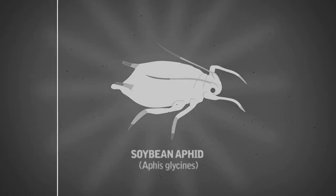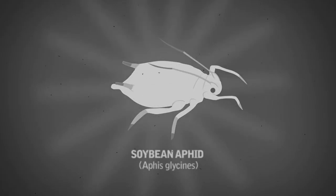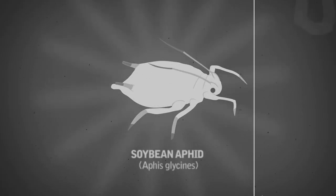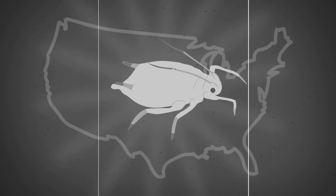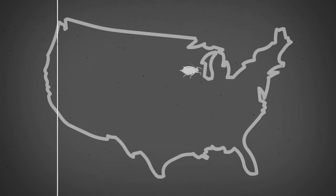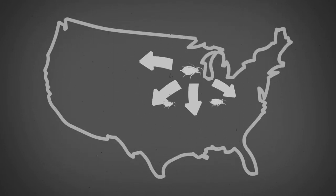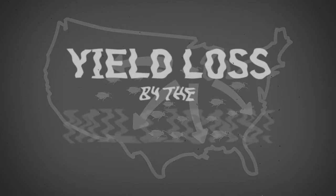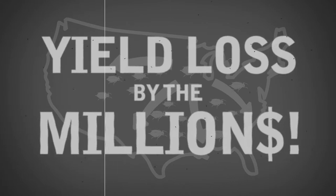Aphis Glycines, commonly known as the soybean aphid, was first confirmed in the U.S. soybean fields in the year 2000 and continues to wage economic damage with each season.